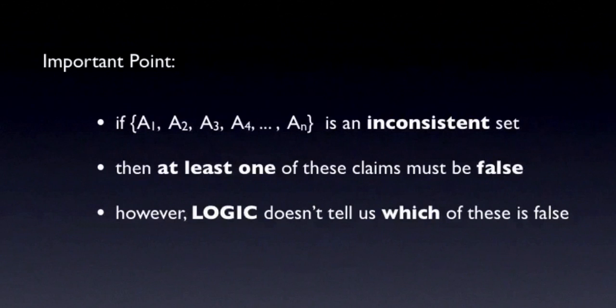So if we want to re-establish consistency, we need to abandon or modify at least one of these claims. We use logic to establish that the set is inconsistent, but it's important to understand that logic alone can't tell us which of these claims to modify. All that logic tells us is that you can't consistently believe all of these claims at the same time. It doesn't tell us how, in any particular case, to resolve the inconsistency.